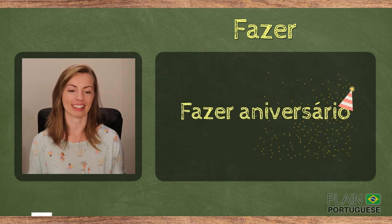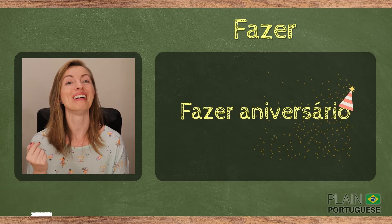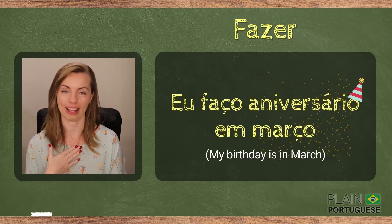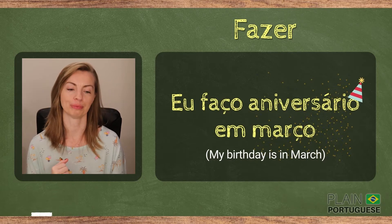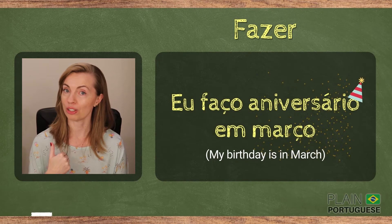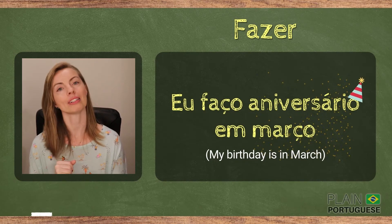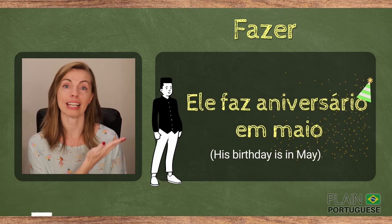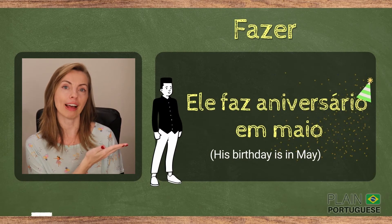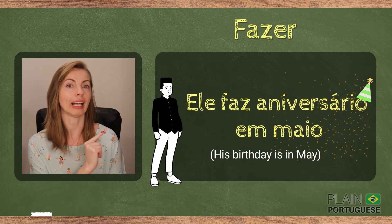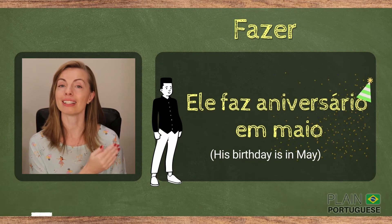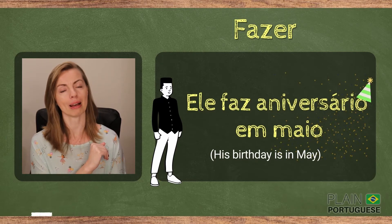Fazer aniversário. My birthday is in March — eu faço aniversário em março. His is in May — ele faz aniversário em maio.